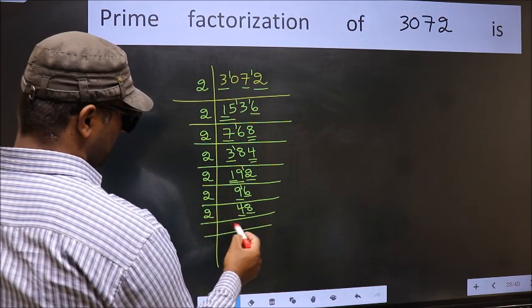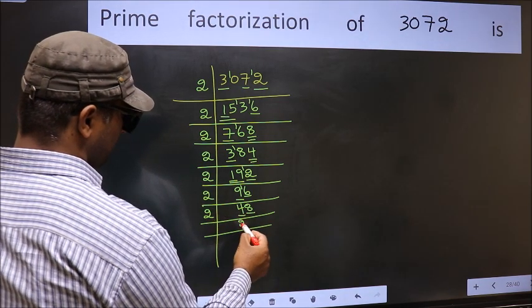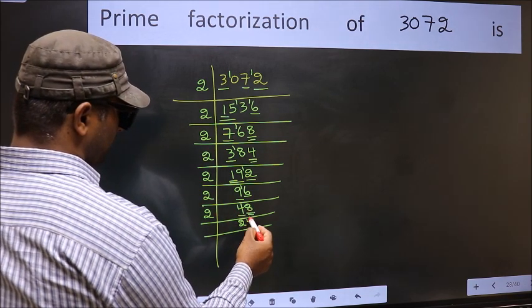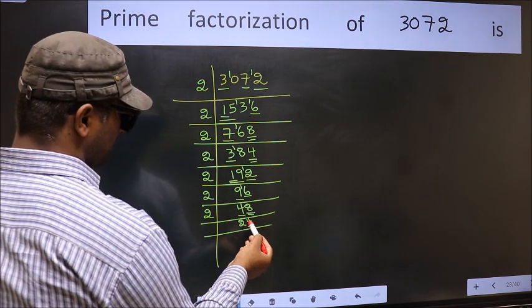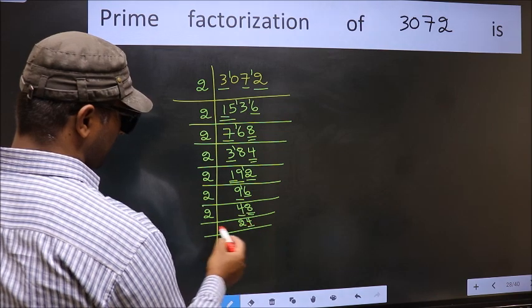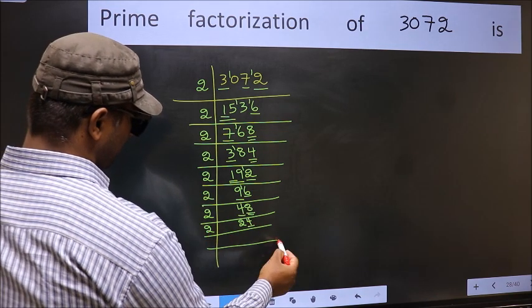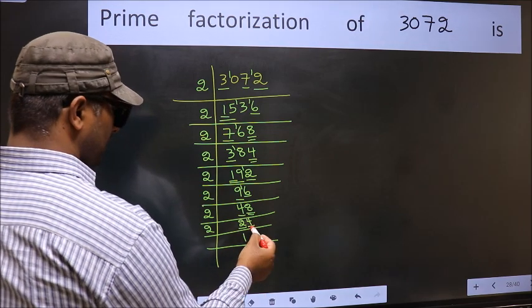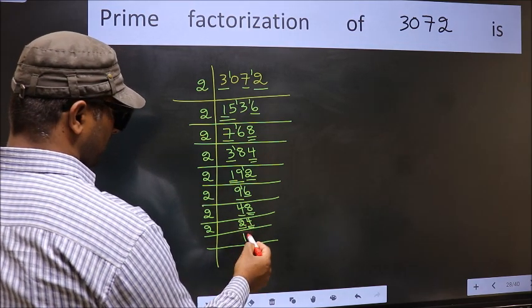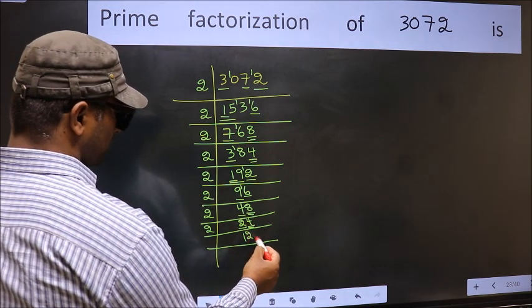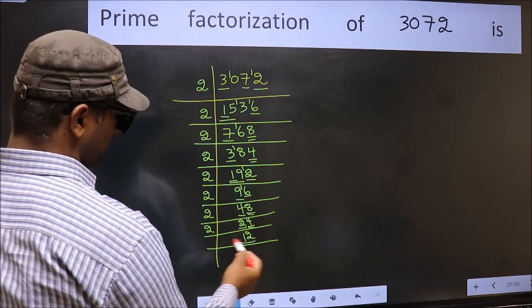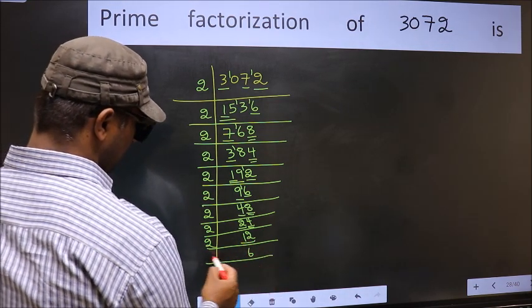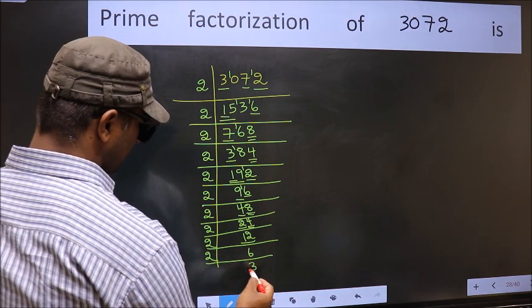First number 4 — when do we get 4 in the 2 table? 2 times 2 is 4. The other number 8 — when do we get 8 in the 2 table? 2 times 4 is 8. Now the last digit 4, so take 2. First number 2 — when do we get 2 in the 2 table? 2 times 1 is 2. The other number 4 — when do we get 4 in the 2 table? 2 times 2 is 4. Now here we have 12: 12 is 2 times 6 is 12. Now we have 6: 6 is 2 times 3 is 6.